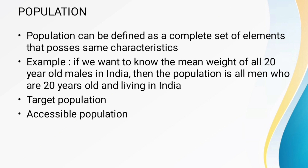Population may be divided into two groups: the target population and the accessible population. The target population is the group to which the researcher's study findings are generalized. The accessible population is the local population — limited to a specific region, state, city, or country — that the researcher can actually access.